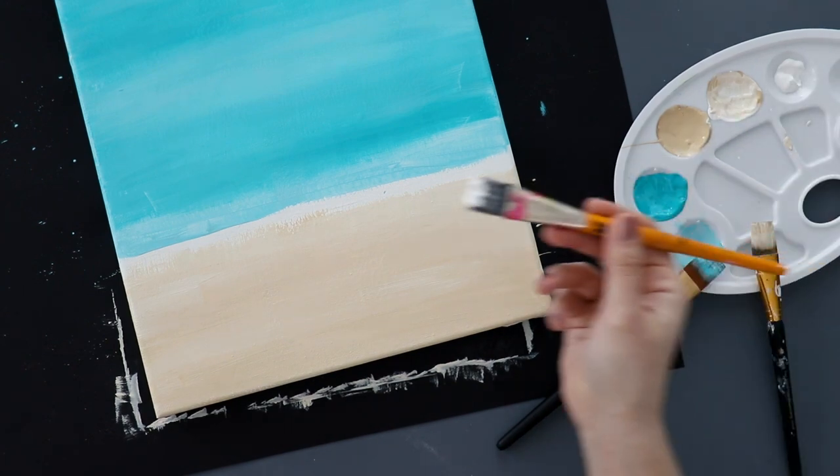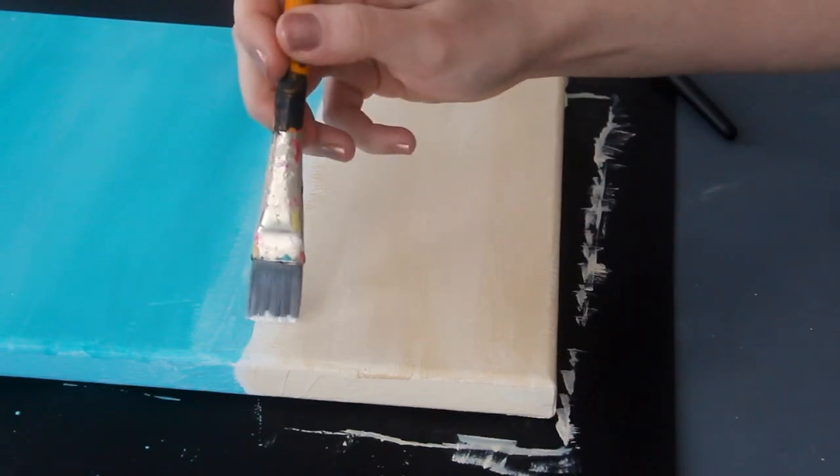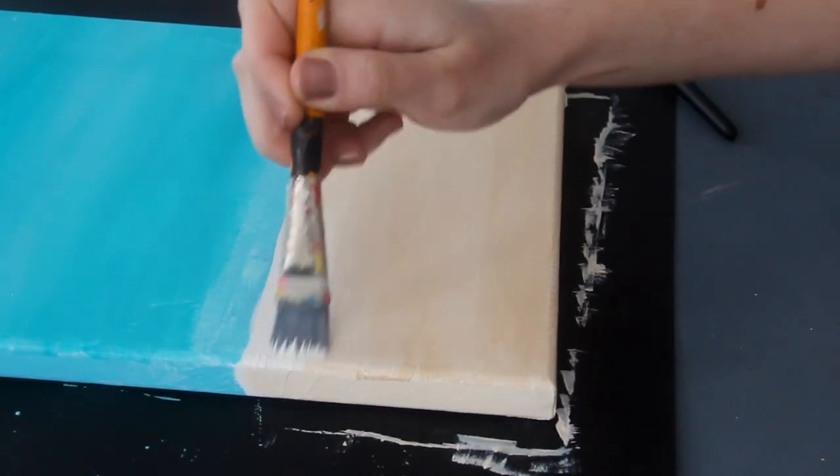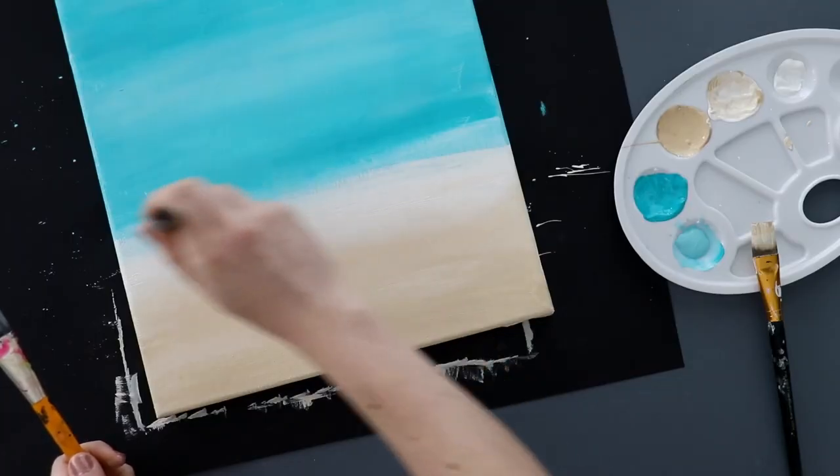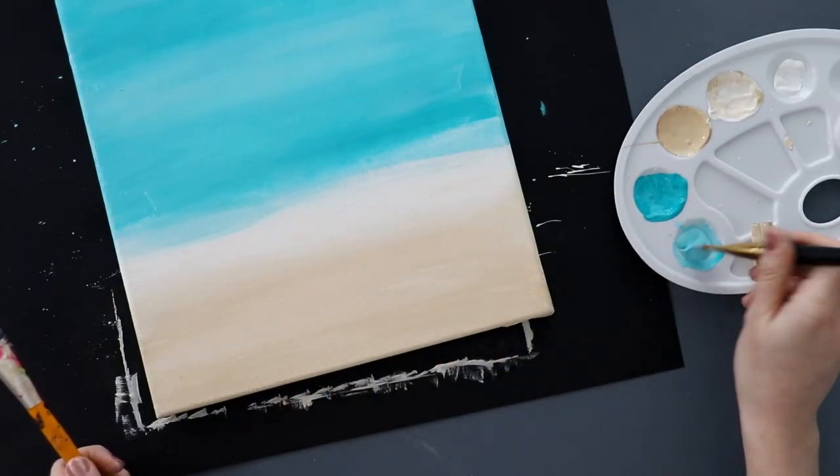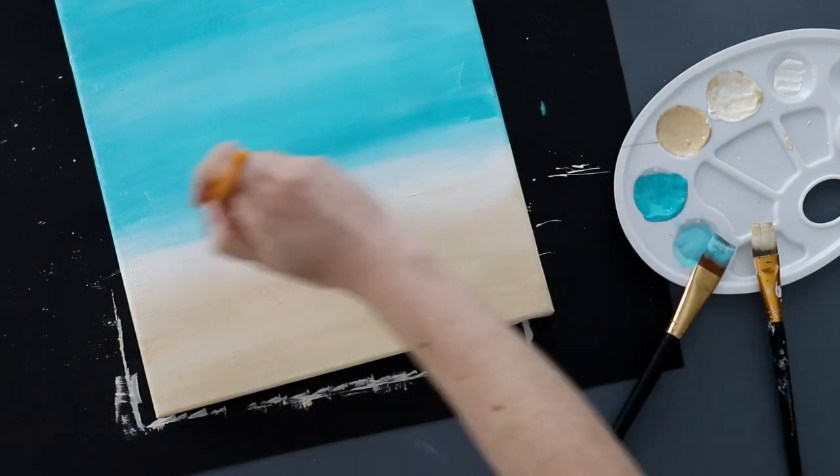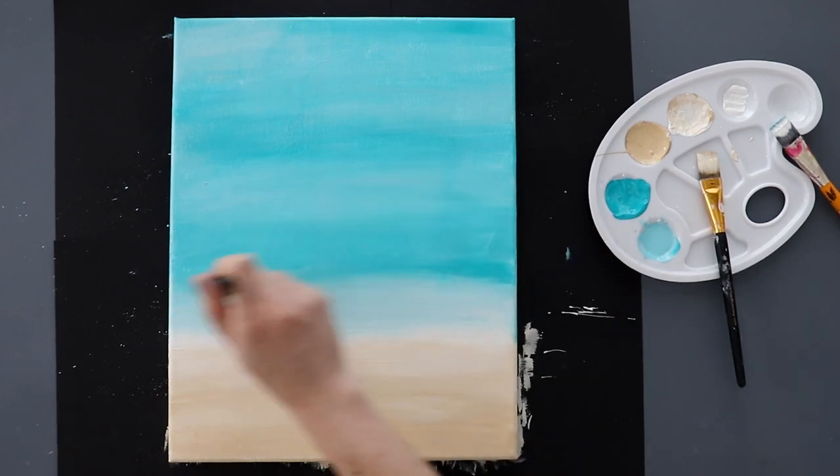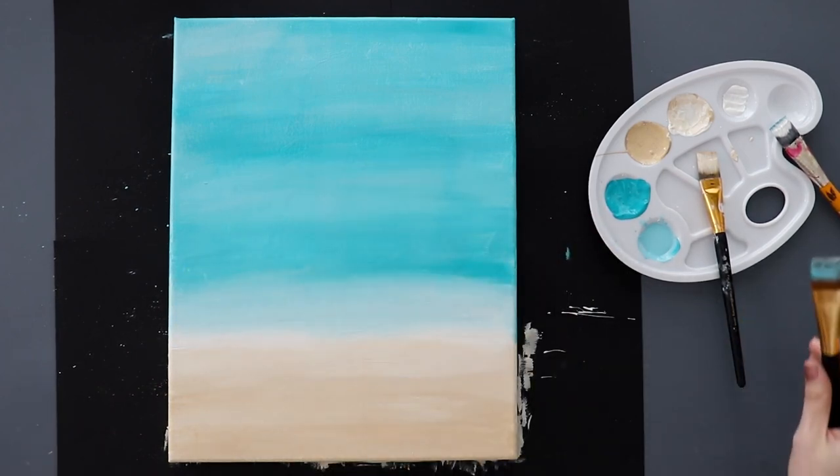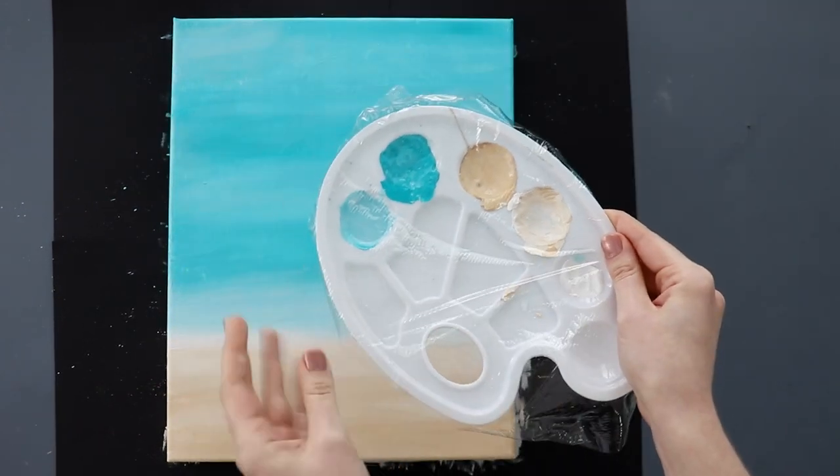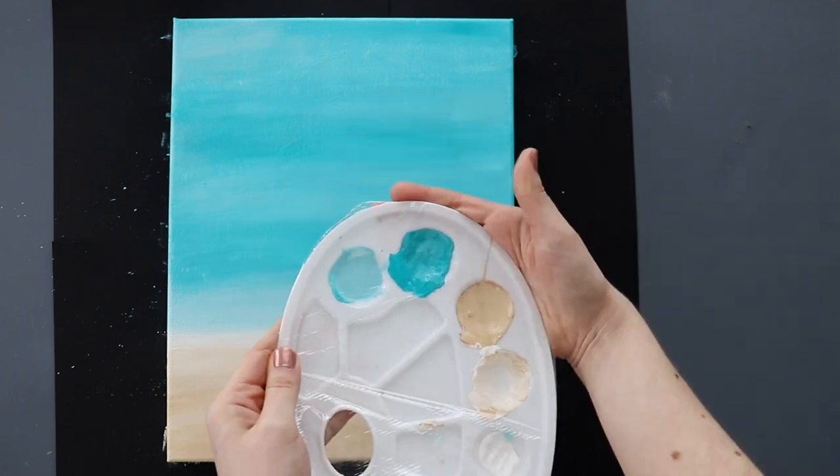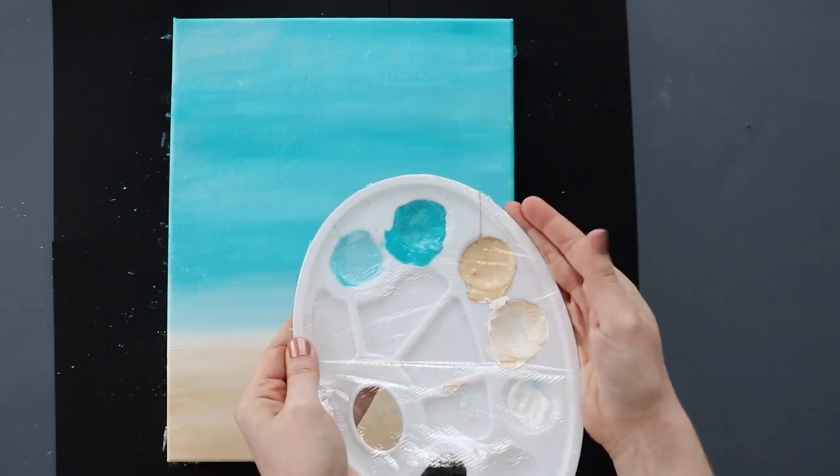Next, grab some white paint on a third brush and use that to blend the two colors together. You can go back and forth with all three brushes to add more paint where needed and just get everything blended nicely. So once you're happy with that, let it dry for 10 or 15 minutes and cover your palette with plastic wrap since we're going to be using the same colors in the next step.